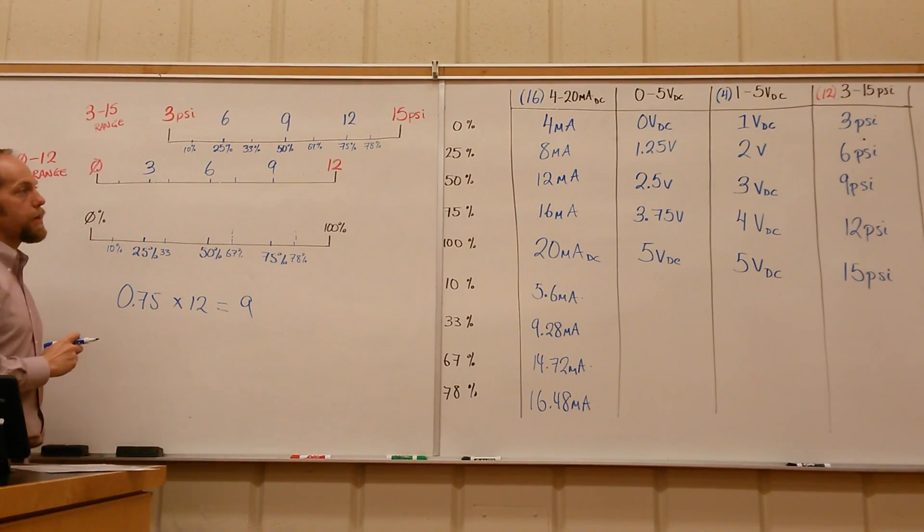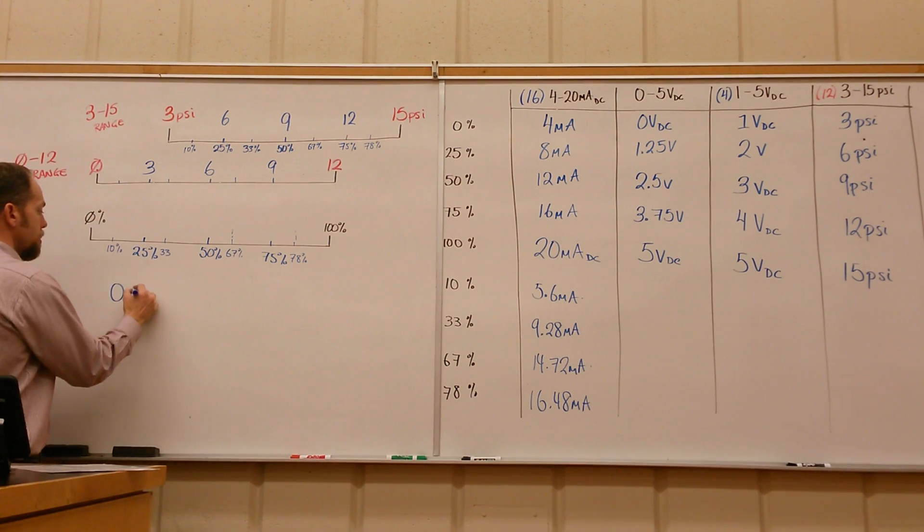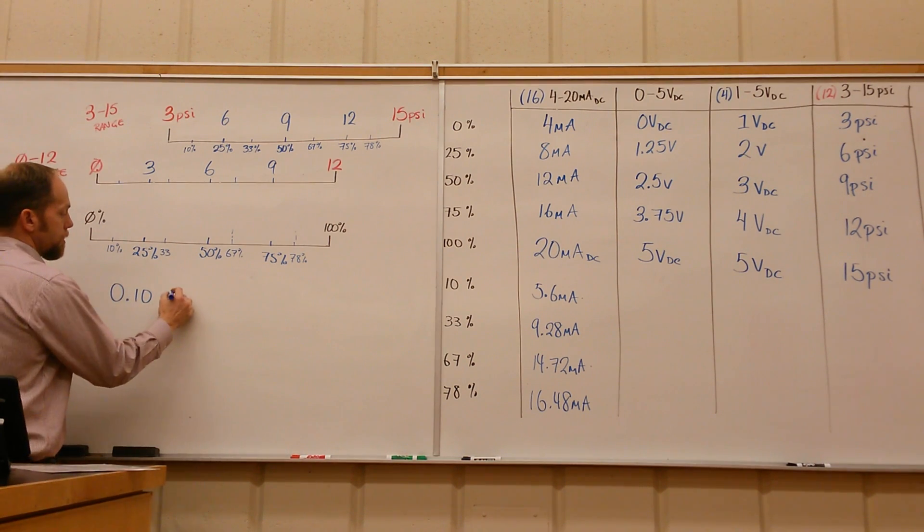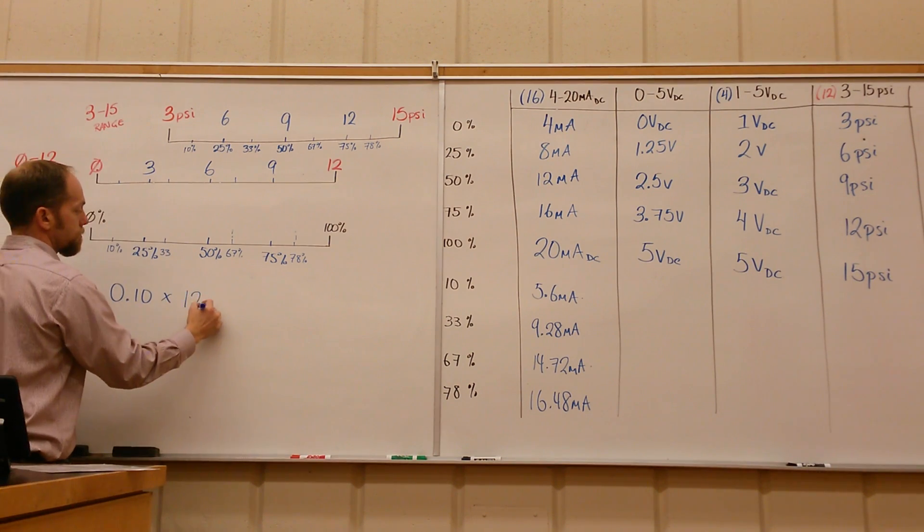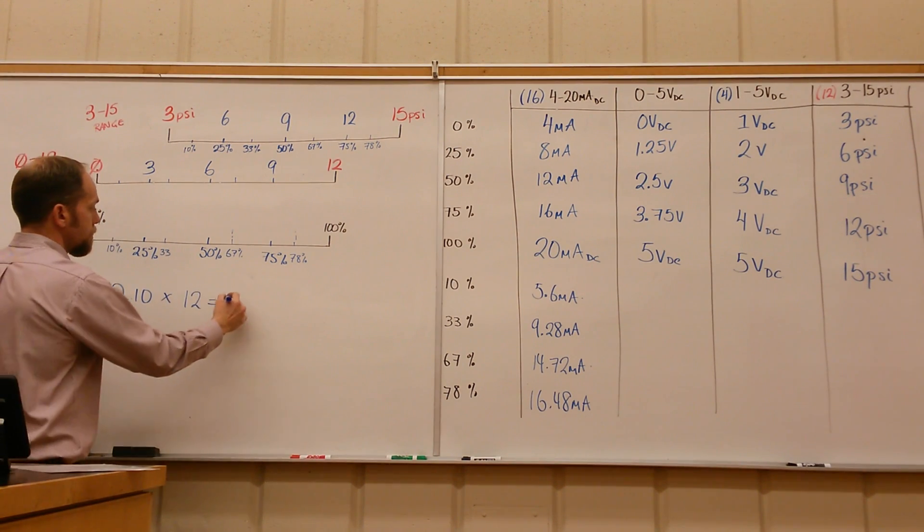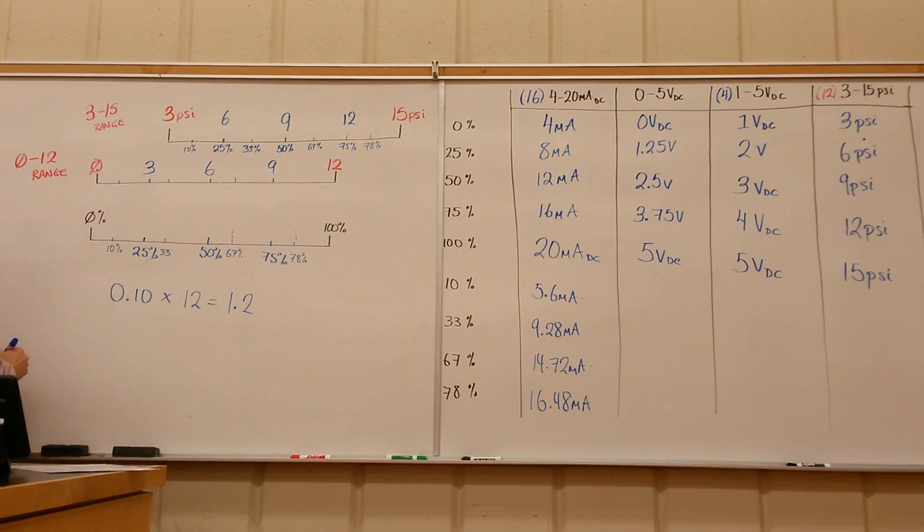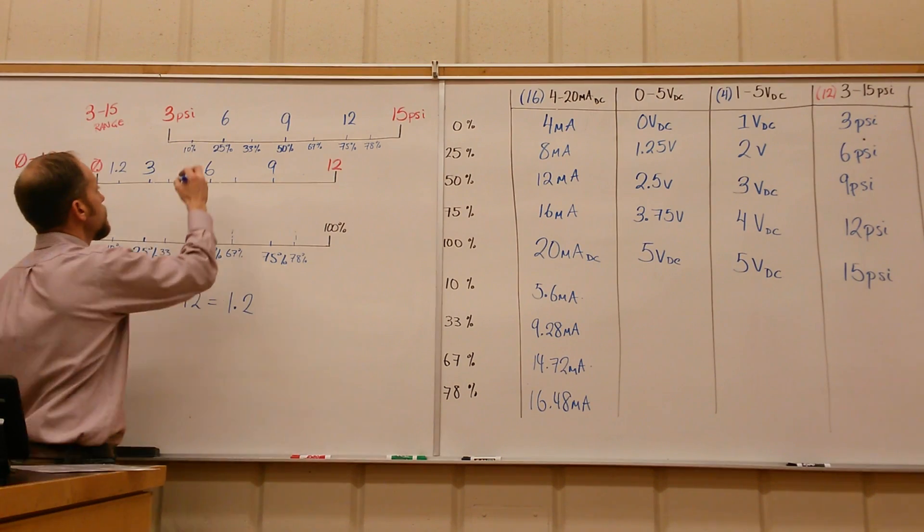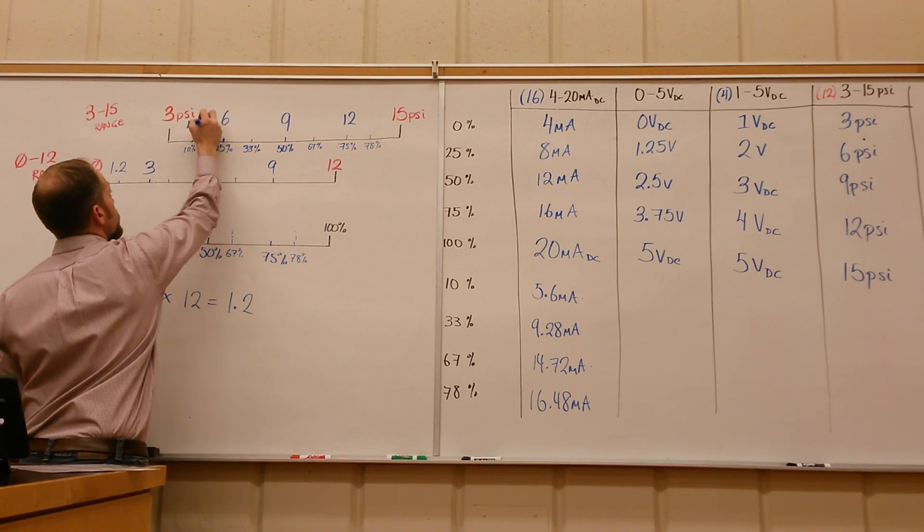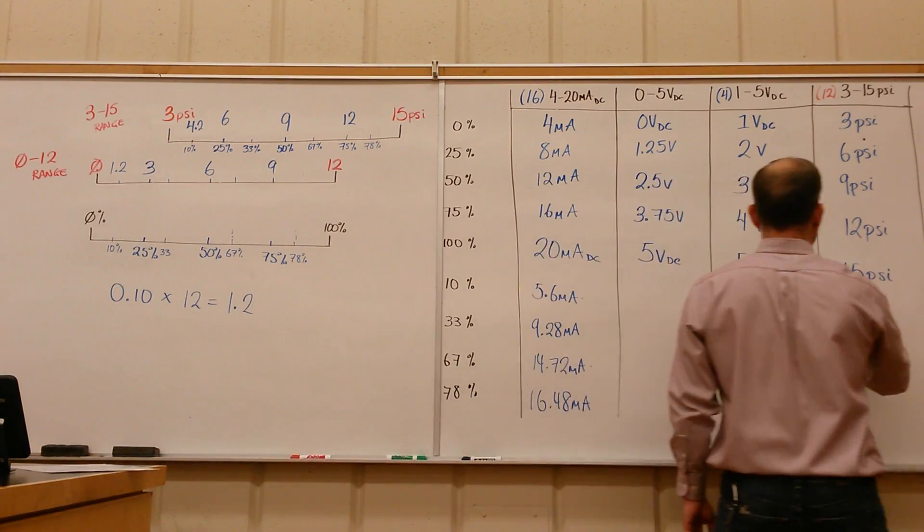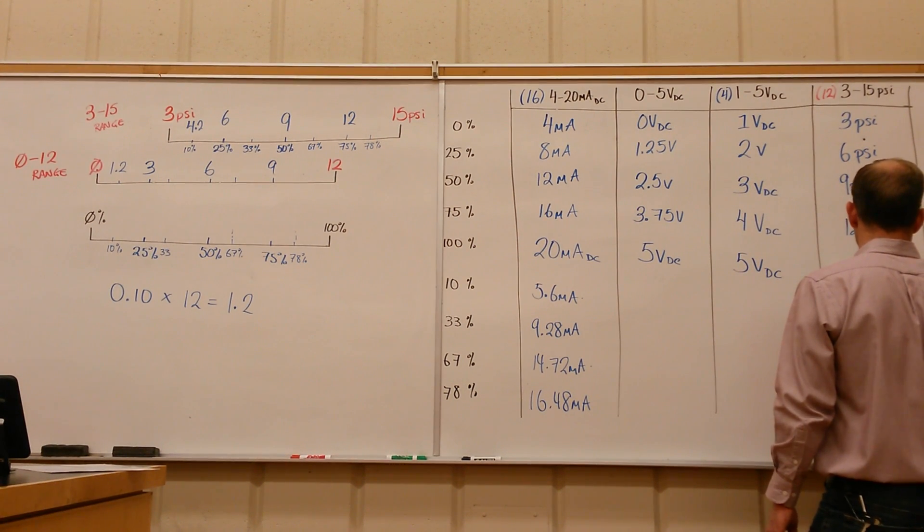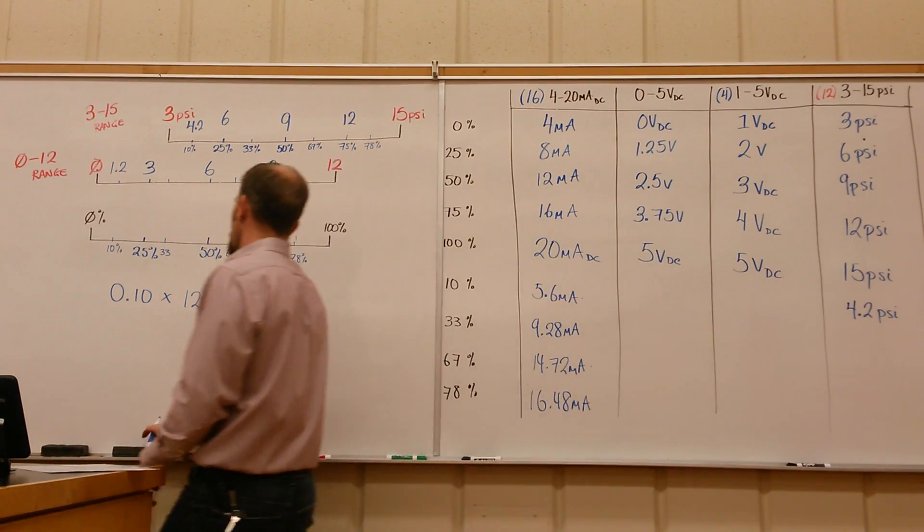For each of these guys, we can go through the same thing. If we go to the 3 to 15, and we take the 10%, we're going to take 0.10 times 12, and that ends up giving us 1.2 psi. So 10% giving us 1.2 on the 0 to 12, and then we've got to add 3 there. So that ends up being 4.2 psi.